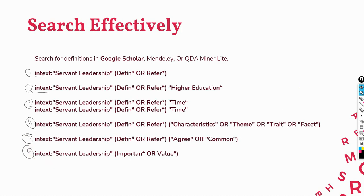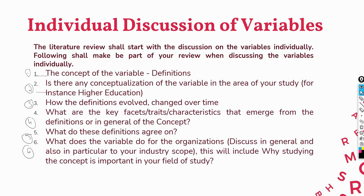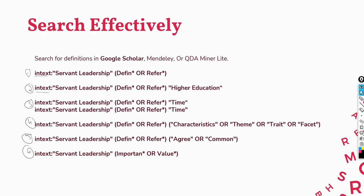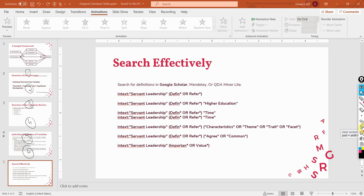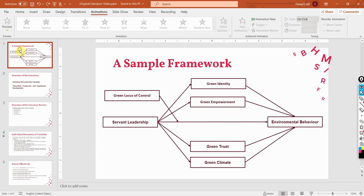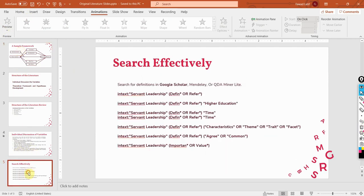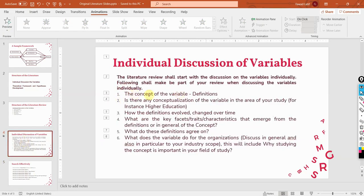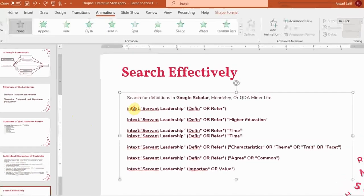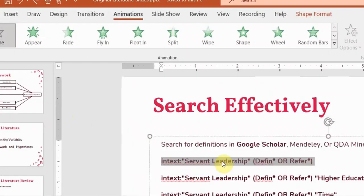I'm going to use each of the six search strings to effectively search each ingredient for my literature review. The first step is the concept of the variable — that is, the definition. Let's say servant leadership is one of my concepts. For step one, searching for definitions, I copy the search string and open Google Scholar.